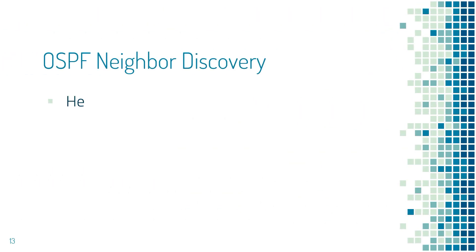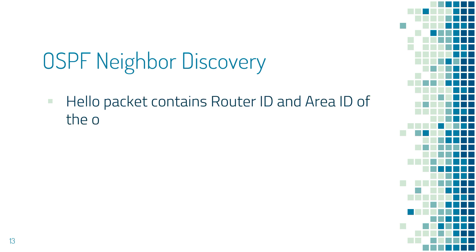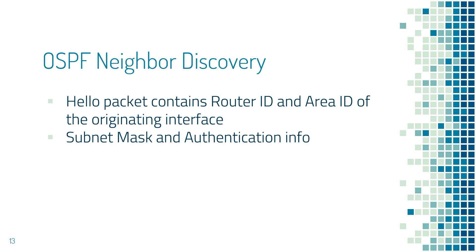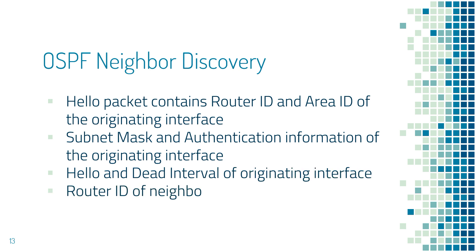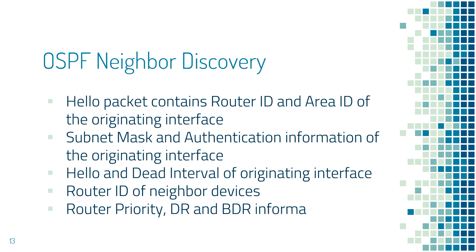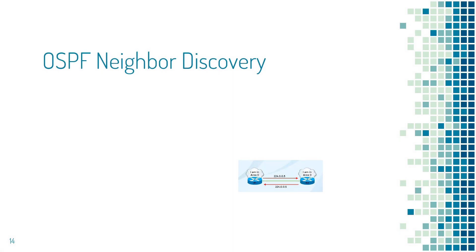OSPF uses the hello protocol for neighbor discovery. The hello packets contain the following: router ID and area ID of the originating interface, subnet mask and authentication information of the originating interface, hello and dead interval of the originating interface, the router ID of the neighbor devices, router priority, DR and BDR information, and finally flag bits.